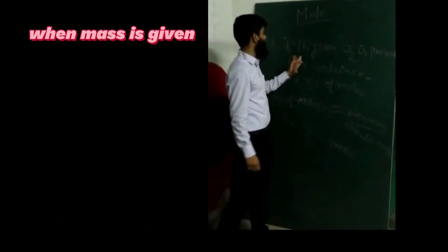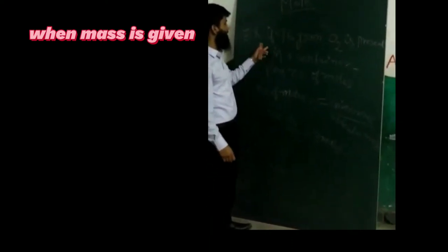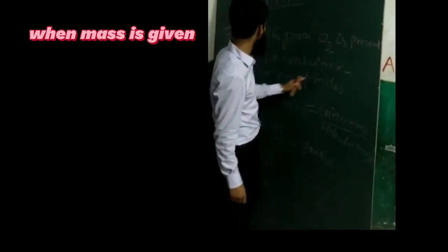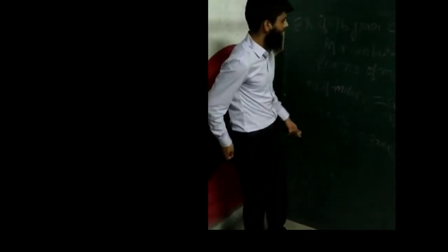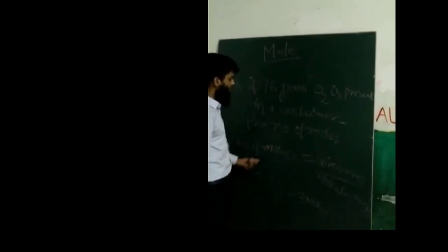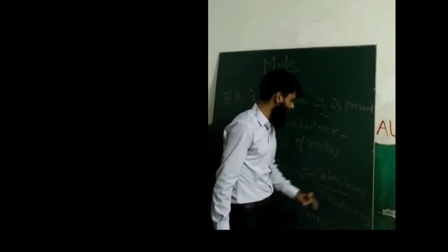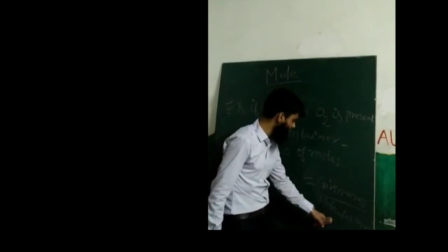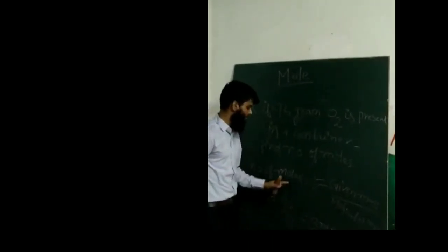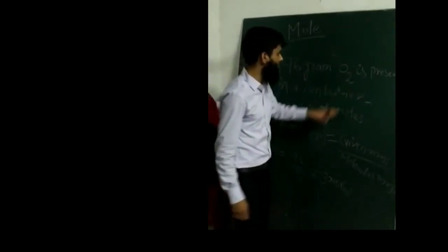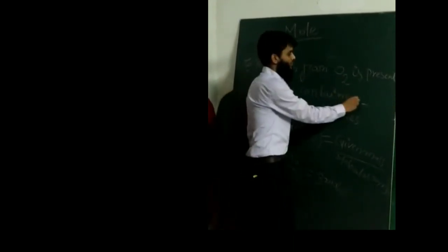Case number one. Given mass: how do you remove 96 grams of container? Find the number of moles. Given mass is 96 grams. So multiply 2.